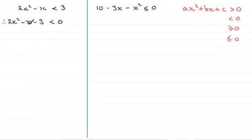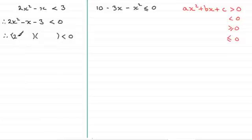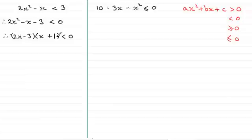I've now got this in the form ax squared plus bx plus c is less than zero. The next thing we do is we factorise this — assuming it factorises. If not, I'll tell you how we can go about this later. But assuming it factorises, this one does. We've got two brackets, less than zero. So we've got 2x and x to give us the 2x squared, and two numbers that multiply together to give minus 3 — that's going to be minus 3 and plus 1. Therefore the critical values...